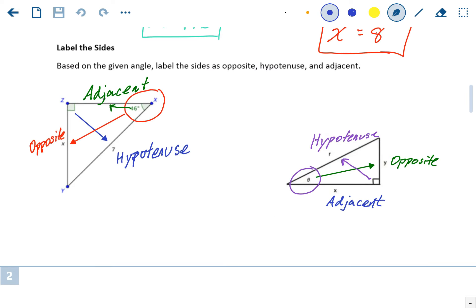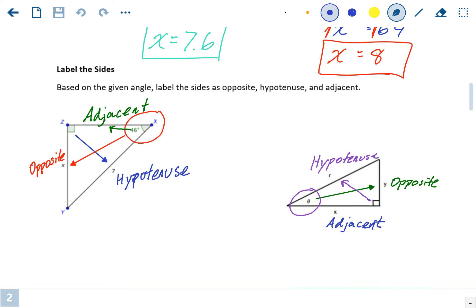Now what we did in part one is we were able to identify the hypotenuse, adjacent, and the opposite sides. So those three sides make up all the trig ratios.